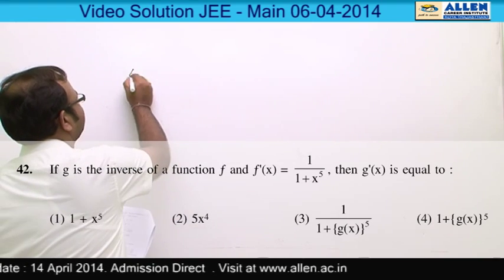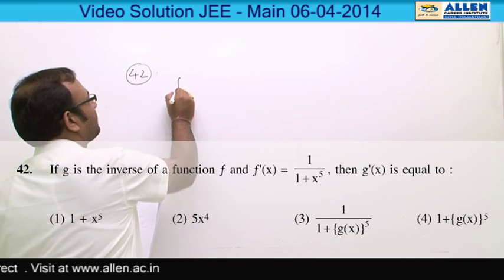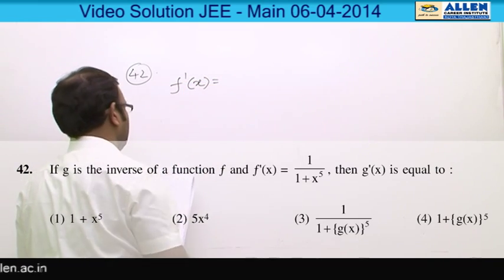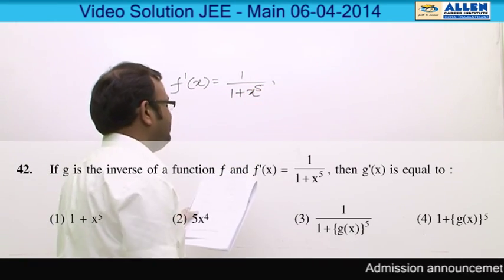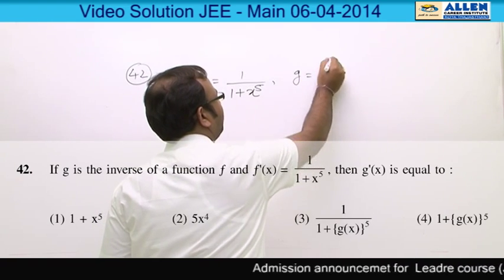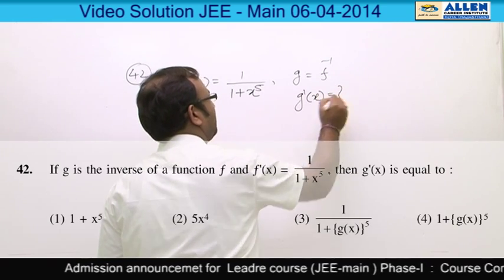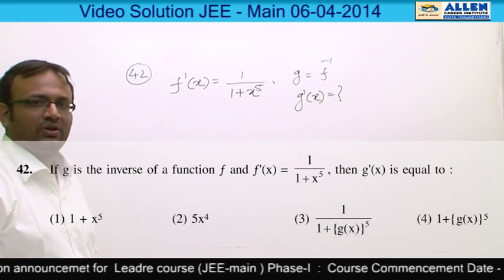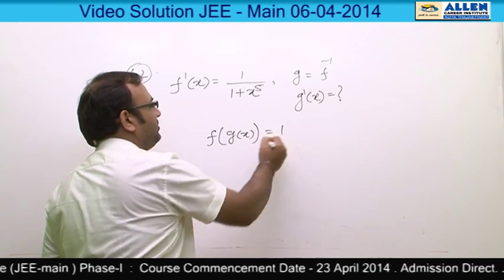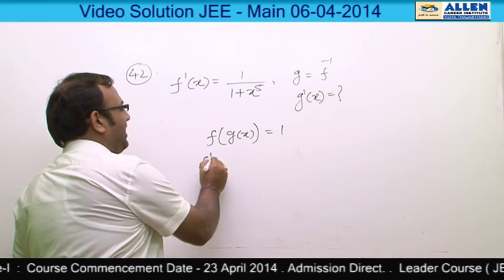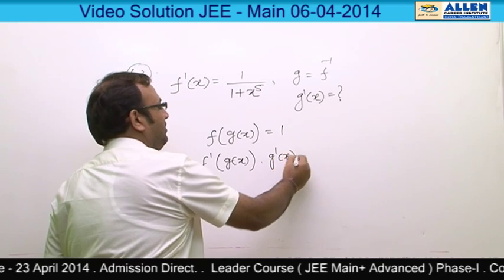Question number 42. In this question, f'(x) = 1/(1 + x^5) and g is given to be the inverse of f, and we have to find g'(x). Since f and g are inverses, f(g(x)) = x. Differentiating both sides, we get f'(g(x)) · g'(x) = 1.